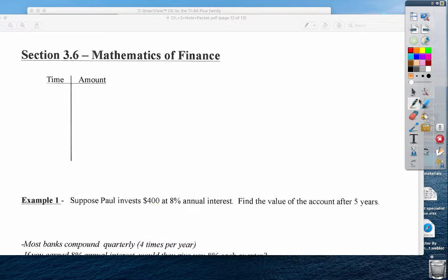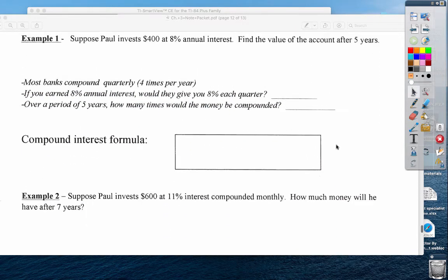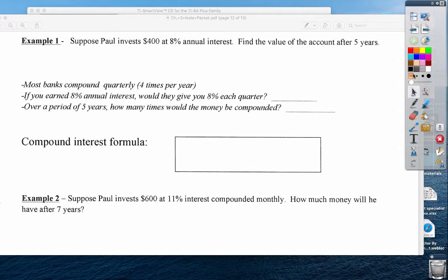Most banks do not do annual interest. They compound your interest quarterly, four times per year. That's different than annual, which is one time per year. If you earned 8% interest, would they give you 8% every quarter? We would hope they would, but they wouldn't. They would split that up equally. We would take our 8% and divide by 4 quarters, so we would get 2% each quarter. That's where you get your 2, 4, 6, 8%. We divide it up equally.